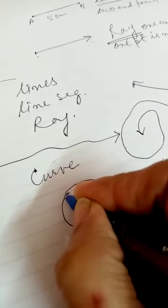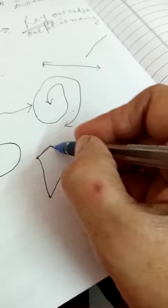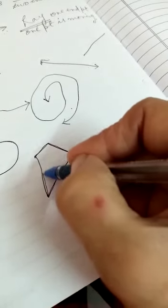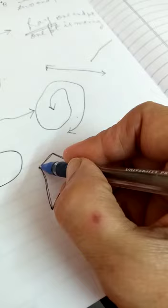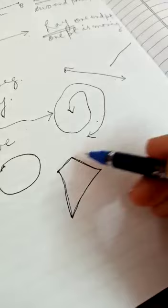Now among curves, this is an open curve — it can move to both sides. This one is also an open curve. Now if we take another line that moves and comes back to the same place and closes, and similarly this diagram starts from a point, moves, and comes back to the original position, there is no open place. So these curves are known as closed curves.